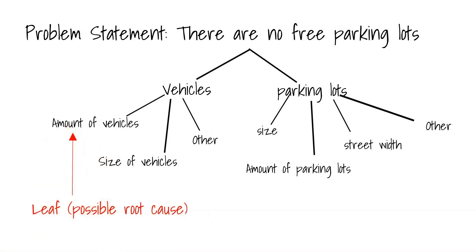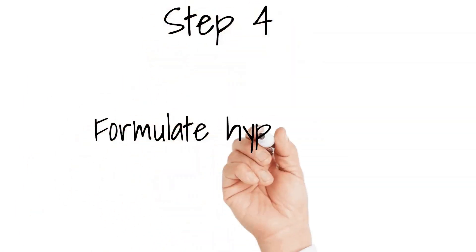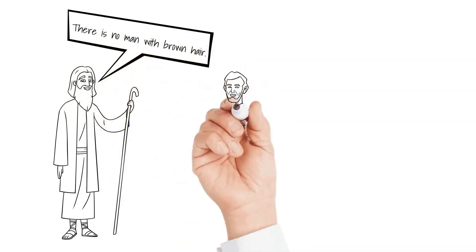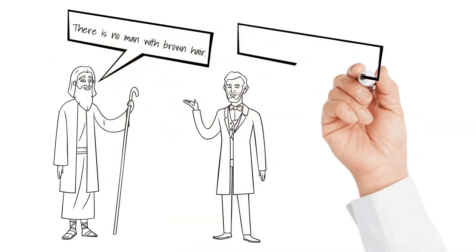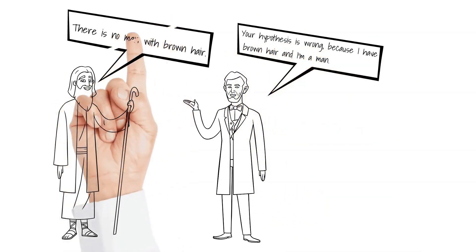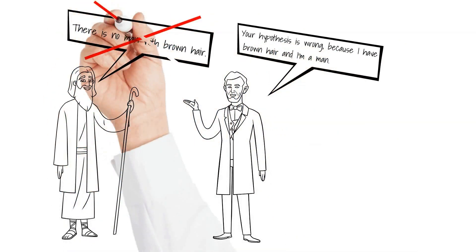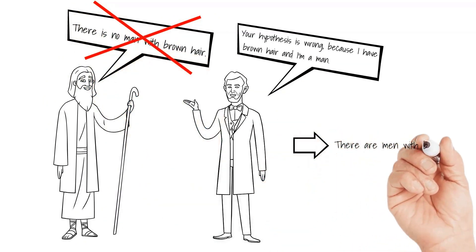Step four: formulate hypotheses and prioritize them. The next step is to build hypotheses around the leaves of our logic tree. A hypothesis is basically an assumption for an argument. We can never show that a hypothesis is true, but we can try to find evidence which is inconsistent with the hypothesis and therefore proves it wrong. We assume a hypothesis is true as long as we don't have evidence which is inconsistent with a certain hypothesis.